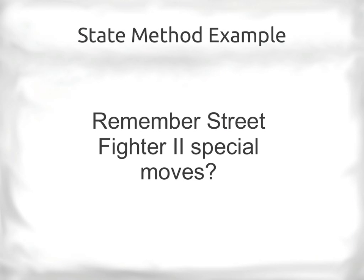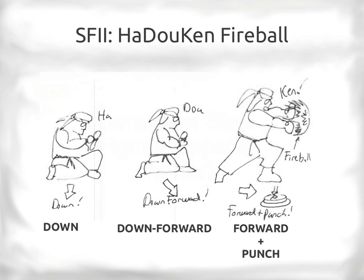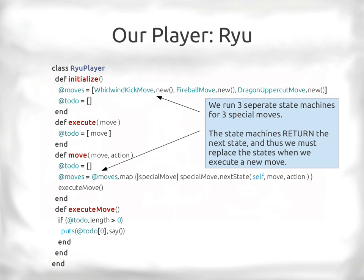Remember Street Fighter 2? Those moves required a sequence of events. The Hadouken is down, down-forward, forward-punch. How do we model that? We can use the state pattern by making each segment of the sequence one class — one class responsible for looking for the next move in the sequence. First, we need a state machine.